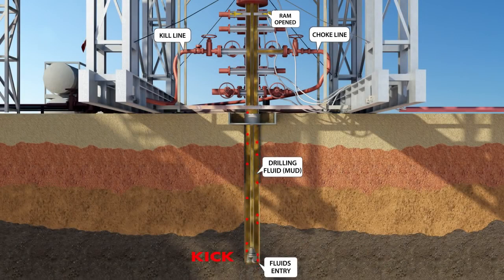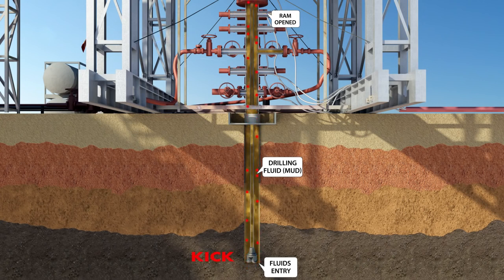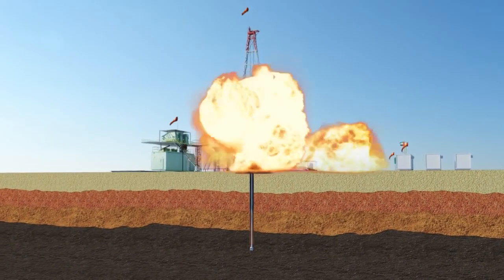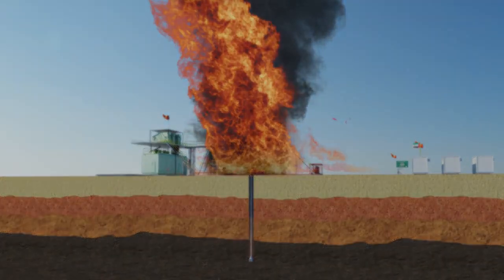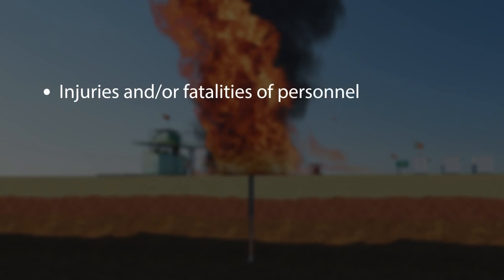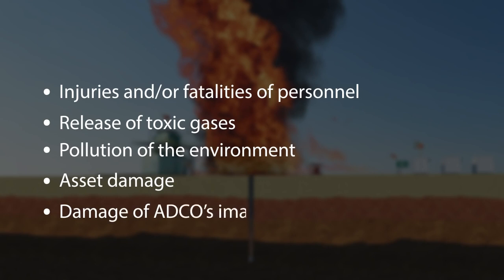If all well control barriers fail — such as human barriers, BOP equipment barriers, and system barriers — and the BOP leaks while circulating the kick out, this could lead to uncontrolled flow of formation fluids and possibly a blowout. A blowout has massive catastrophic consequences, such as injuries and fatalities of personnel, release of toxic gases, pollution of the environment, asset damage, and damage to ADCO's image and reputation.